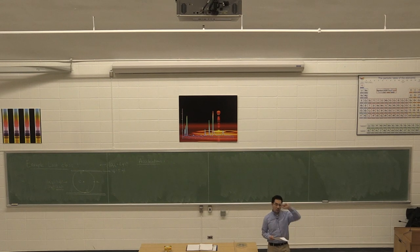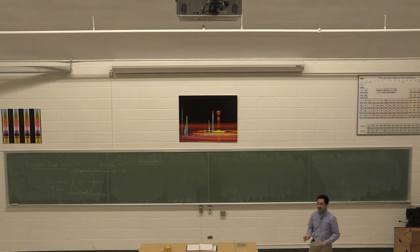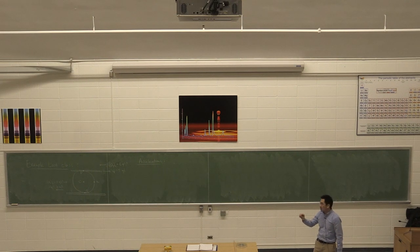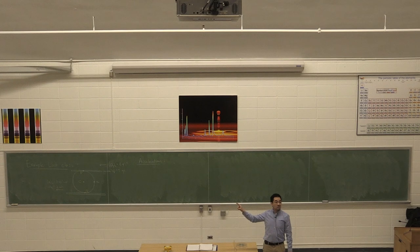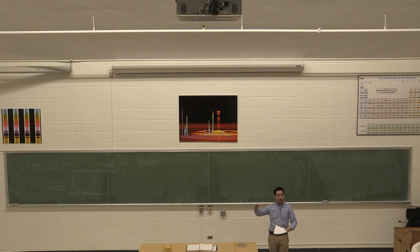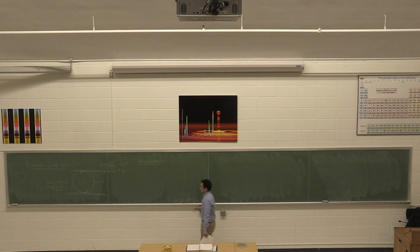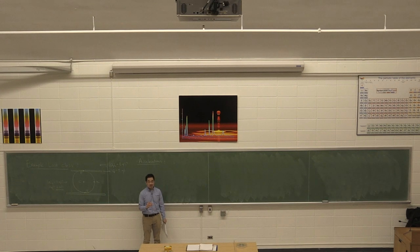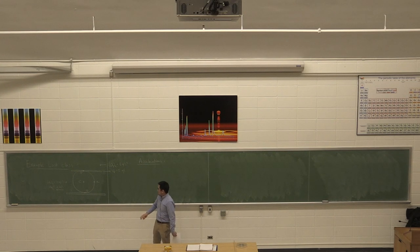Welcome back. We're continuing on with the example from last class. Just to recap what we did on Monday: I started this example — a rolling wheel in between two parallel flat plates, where the conveyor belts are sliding to the right in different directions. We did all the velocity calculations at the end of last class and I said I would save all the acceleration calculations for the start of this class. Let me remind you of the scenario.